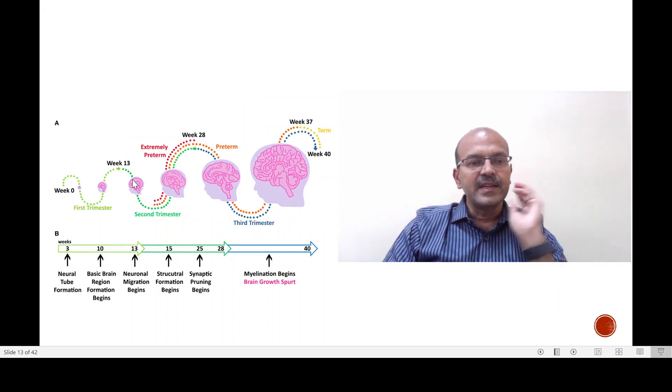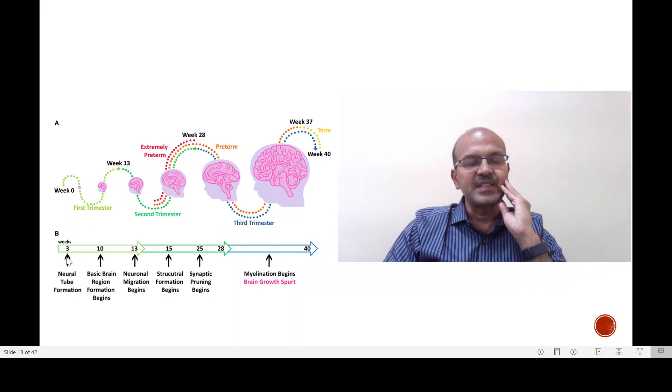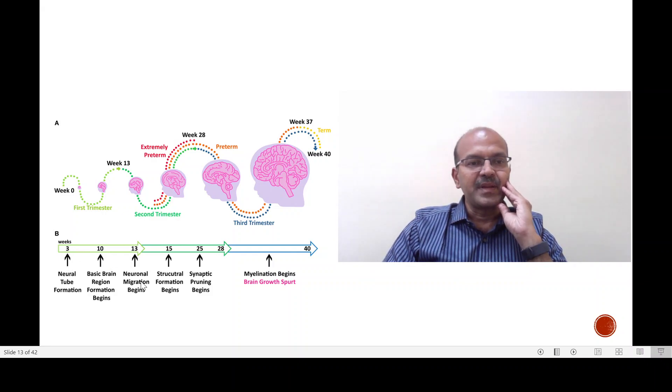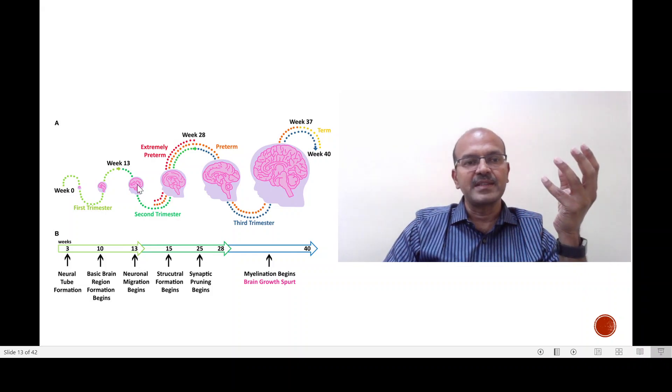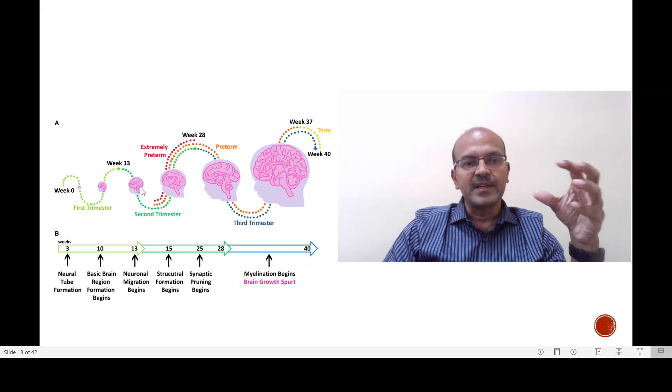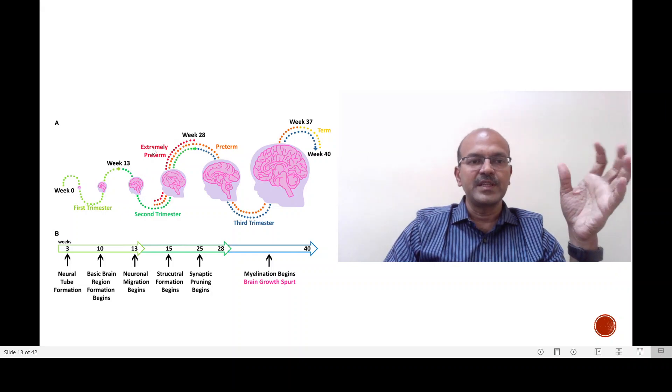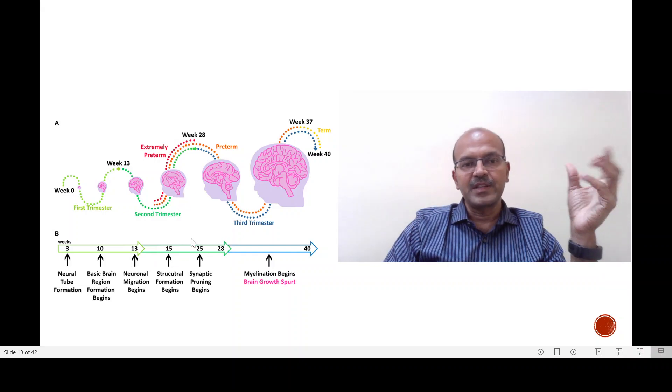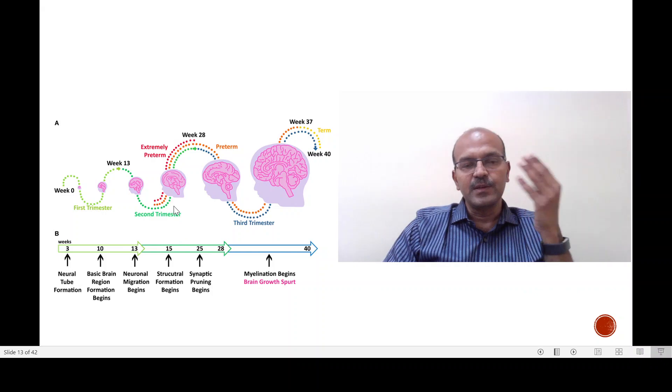This is a diagram which illustrates the different stages of brain formation. We have neural tube formation at 3 weeks of gestation and the basic brain region starts forming. By 13 weeks the neuronal migration begins. The cells have started forming and are migrating from near the lateral ventricles, the germinal matrix area, to the peripheral part of the brain. From 15 weeks onwards the actual structural formation starts. You can make out the gyri, the more mature structure from this stage.